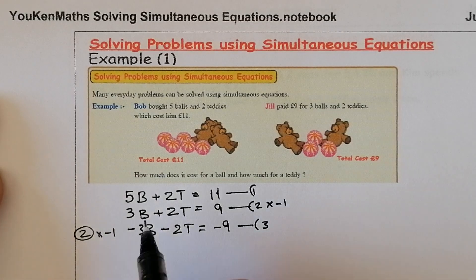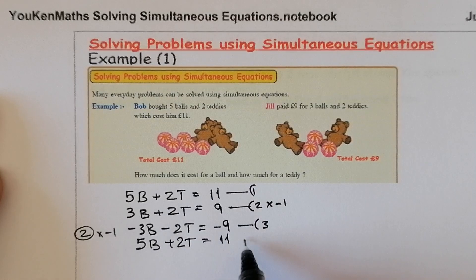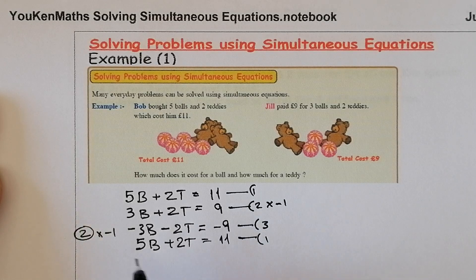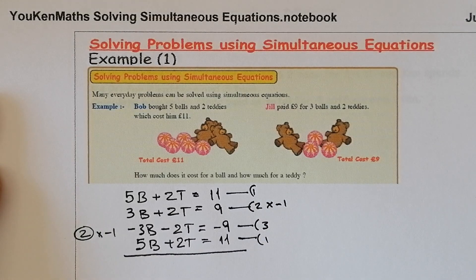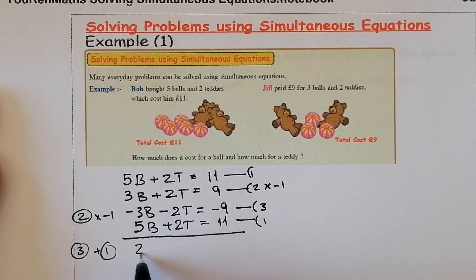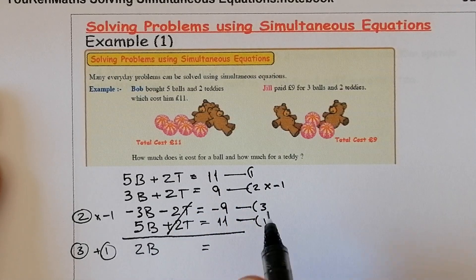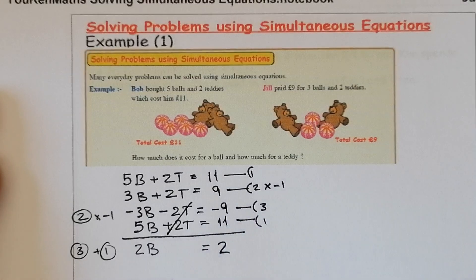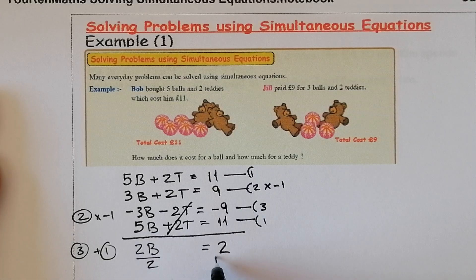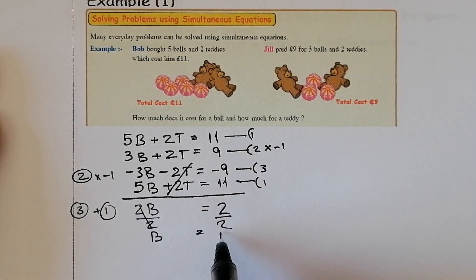I'm going to bring down equation number 1: 5B plus 2T equals 11. Now, just like we've been doing in previous examples on simultaneous equations, I'm going to add equation 3 plus equation 1. When I add these together I get 2B — I've eliminated the T's, so I've only got the balls. Negative 9 plus 11 gives us 2. Divide both sides by 2, and we get B is equal to 1.